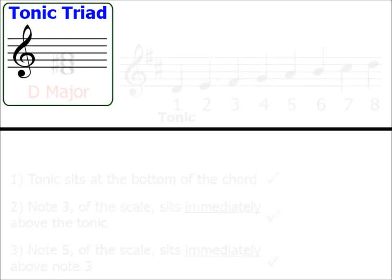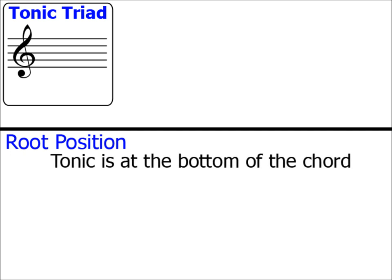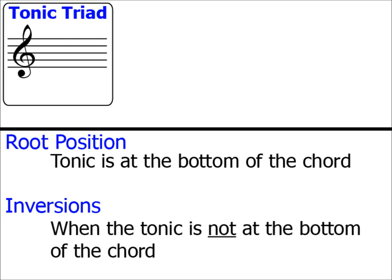Before we tackle one final example, I just want to explain the meaning of the phrase 'root position.' It's quite common for musicians to refer to tonic triads, or indeed any other type of chord, as being in root position. All this means is that the tonic is at the very bottom of the chord. There are ways to move the tonic so it appears elsewhere — musicians call these inversions, which I cover in another video. So if you're asked to write a tonic triad in root position, it merely means ensure that the tonic is at the bottom of the chord.